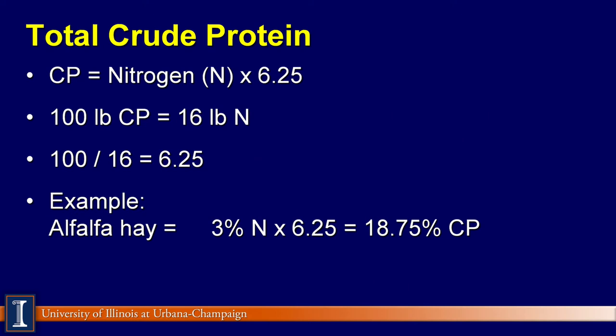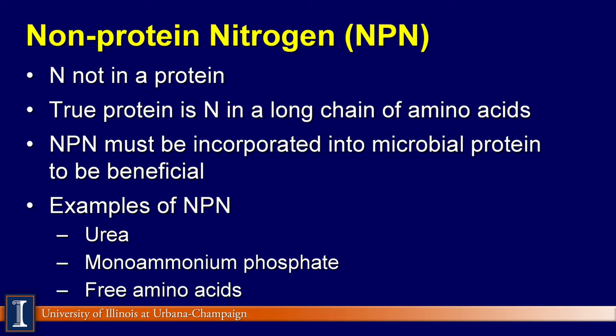Non-protein nitrogen, or NPN, is any form of nitrogen other than several amino acids hooked together to form a protein. Examples of non-protein nitrogen are urea, monoammonium phosphate, and free amino acids that are not connected together in long chains by chemical bonds.